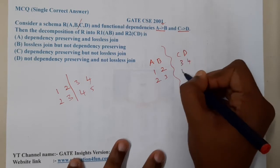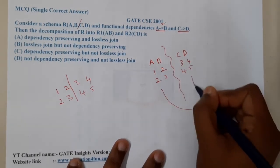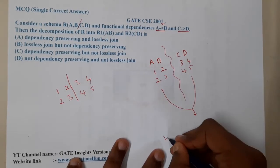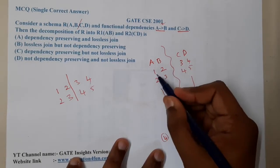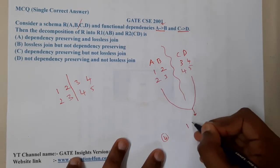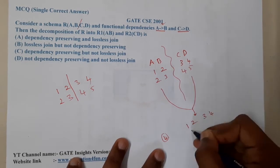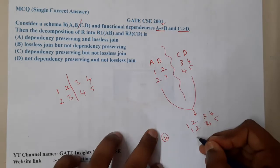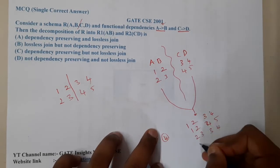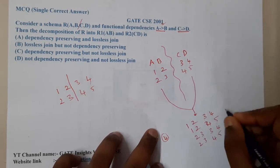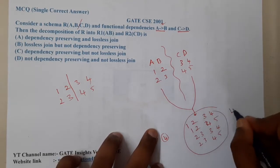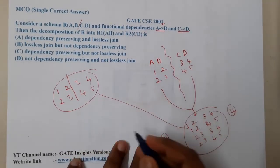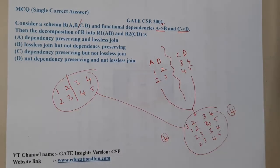If you assume the original table has only two entries, when you break it you get two entries on each side. But if you want to combine them in the future, you will get four entries because one-two will match to both three-four and four-five, and two-three will also match to three-four and four-five. So we end up with four entries rather than the original two, which means this is a lossy join.